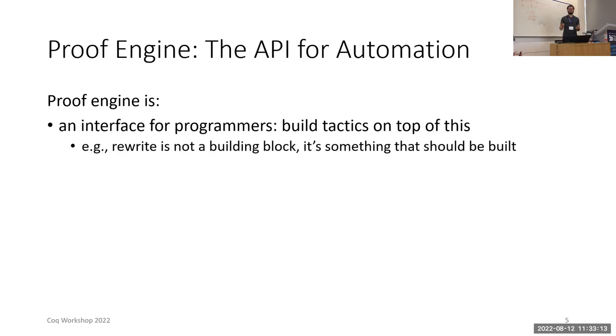This means that rewrite is not part of this fundamental interface. It's something that should be built on top of the proof engine. It would be nice to have a minimal orthogonal performance interface. As far as I know, we don't have this.